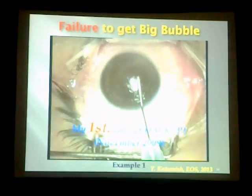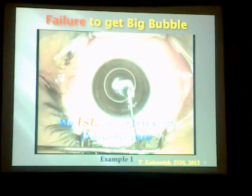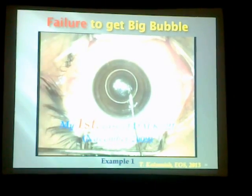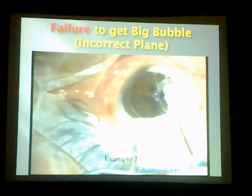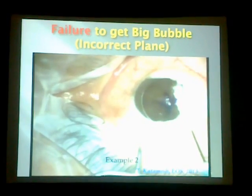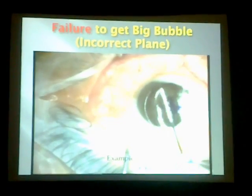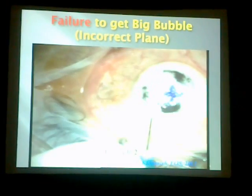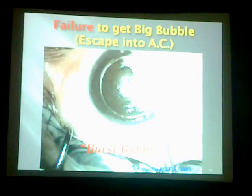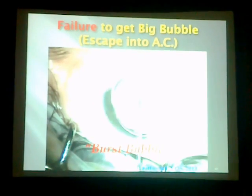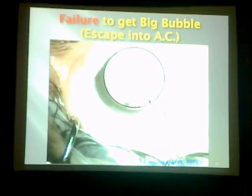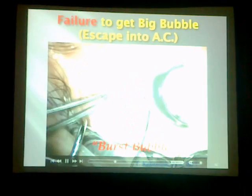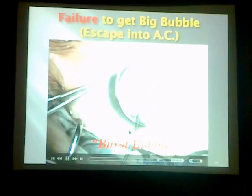Of course, not always success — we may have failure of the big bubble. In my first case three years ago, I had a perforated Descemet's membrane and injected directly into the anterior chamber. Sometimes, when you place the cannula in a wrong, superficial plane, whatever you inject makes a stromal edema and you fail to get the big bubble. Another example of failure is the burst bubble — when you have the bubble and it suddenly bursts into the anterior chamber, which is another form of failure.